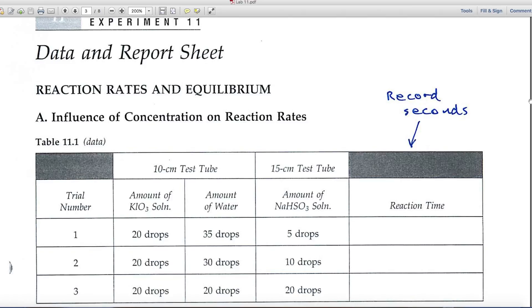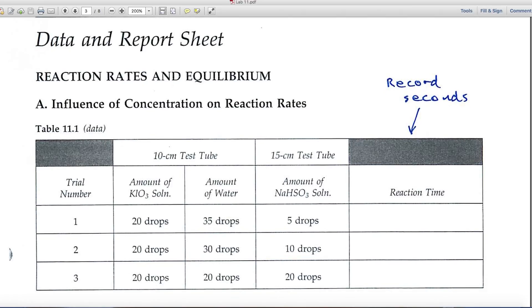Here are the data and report sheets. Reaction rates, of course, are how fast something occurs. Looking at part A — the influence of concentration on reaction rates — you'll be recording reaction times in seconds.